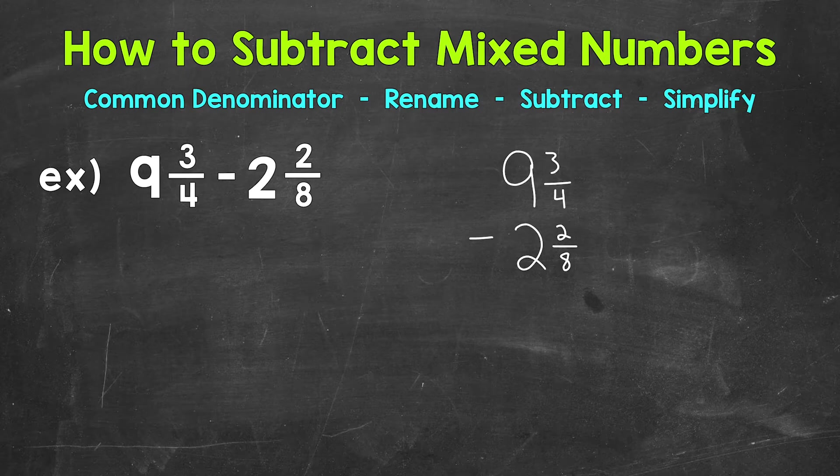So what I'm going to do, I'm going to subtract the fractions first and then the whole numbers. Now when we subtract fractions, we need a common denominator. So as we have the problem written out now, we have a denominator of 4 and a denominator of 8. So we can't subtract quite yet. We need to find a common denominator and rename.